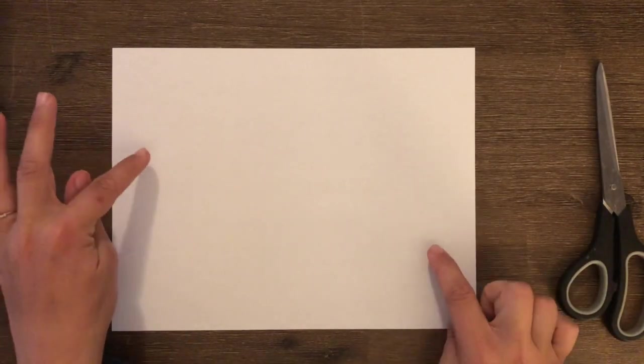Alright, so the first thing we're going to have to do is we're going to have to try and figure out how to make this rectangle piece of paper turn into a square. Knowing what we know about our two-dimensional shapes, we know that two triangles can become a square.